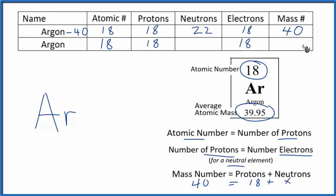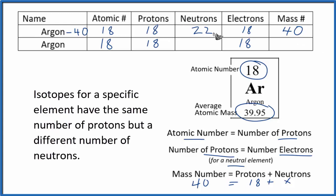Since the average atomic mass is close to 40, that means most of the isotopes will have a mass number of 40 with 22 neutrons. The other main isotope for argon is argon-36.